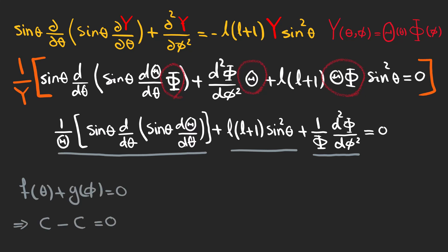Two of them are just dependent on theta and one is just a function of phi. The only way we can have two functions of different variables add up to zero is that they both are constant and cancel out.